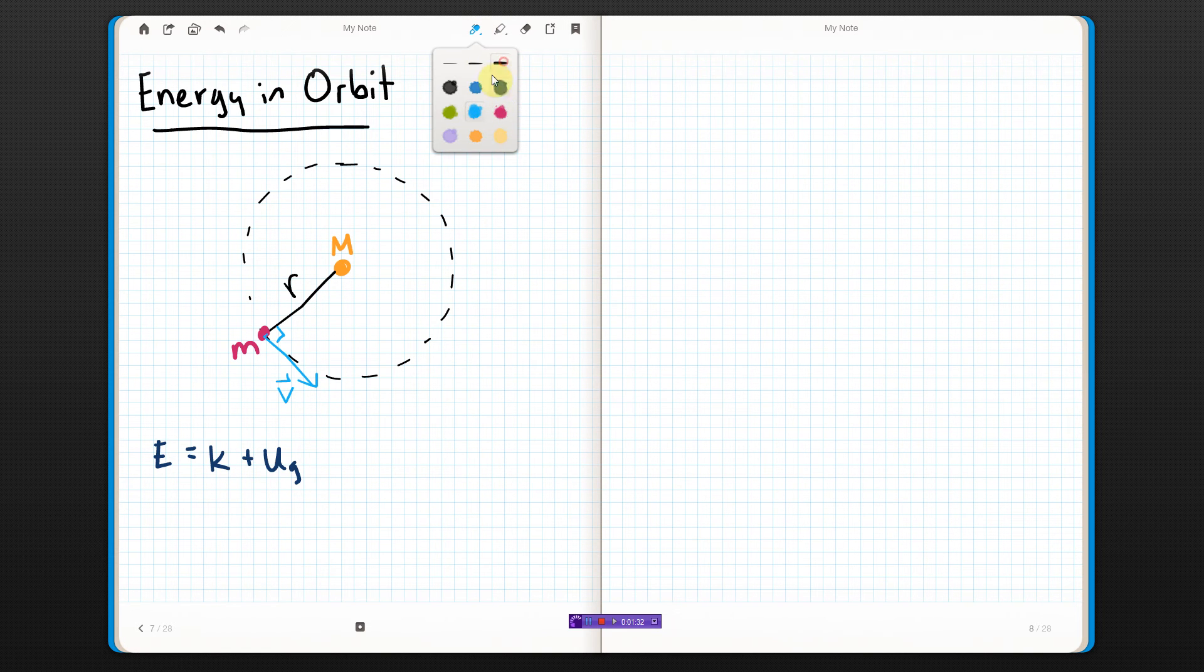Gravitational potential energy between two objects, when you have two objects a certain distance apart, is given by negative G M1 M2. So, M1 is big M, M2 is little m divided by the distance between them. Where U equals zero at an infinite separation. So, here R is the radius of the satellite's orbit, assumed for the time being to be circular. And the M's are the two masses.